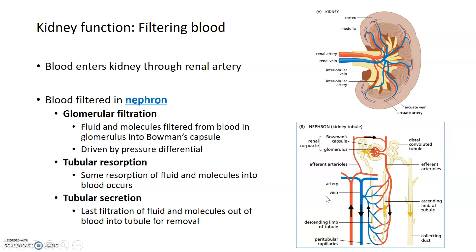In terms of what's happening in each part of the nephron: glomerular filtration occurs in the glomerulus, which is the clump of blood vessels surrounded by Bowman's capsule. In this part of the process, fluid and molecules are moved out of the blood in the glomerulus into the Bowman's capsule — shown by the yellow arrow here. This is mostly driven by a pressure differential, since arteries have higher pressure than veins, which drives things out of the blood into the Bowman's capsule.